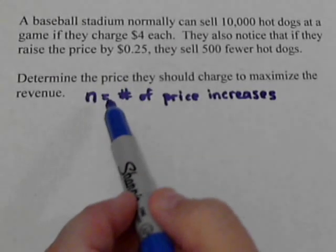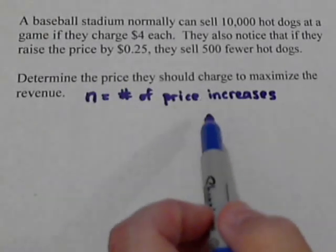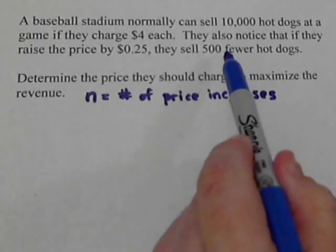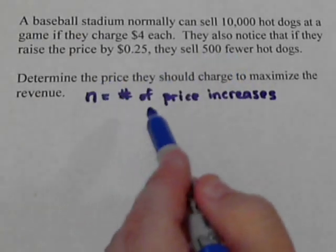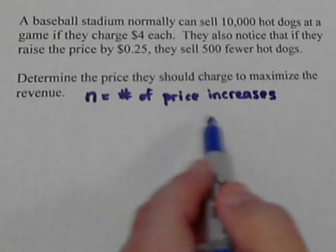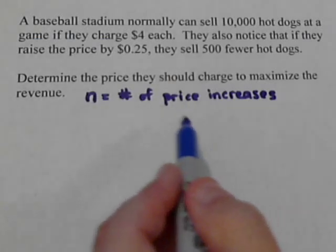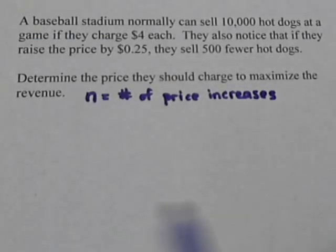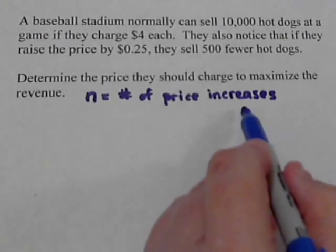Now, we could work out this problem where n would be the number of price decreases. We could lower the price and sell more hot dogs and we would get the same answer. Our numbers would all, the negatives would be flip-flopped. So, for argument's sake, we're going to do it this way.